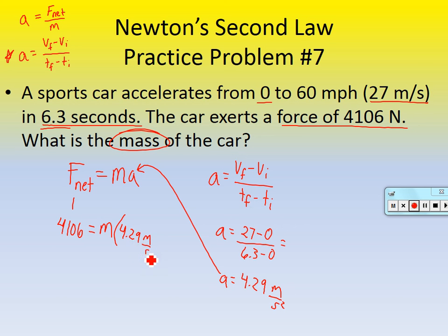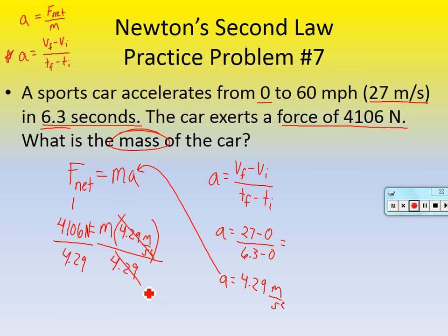We have acceleration of 4.29 m/s². Solve for mass by dividing both sides by 4.29: mass equals 4,106 divided by 4.29. The mass of the car is approximately 957 kilograms. Remember the unit for mass must be kilograms. Always include units along with the magnitude in your answer.